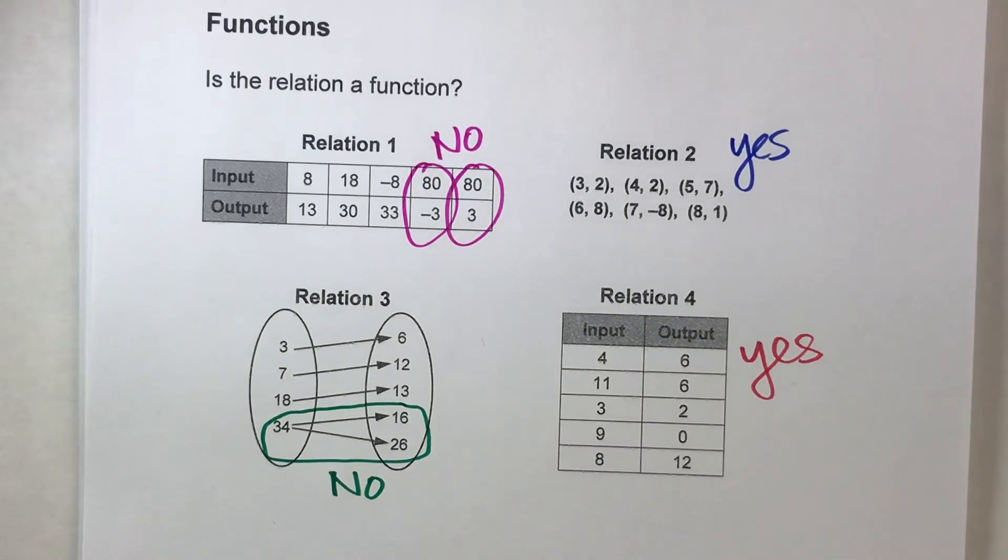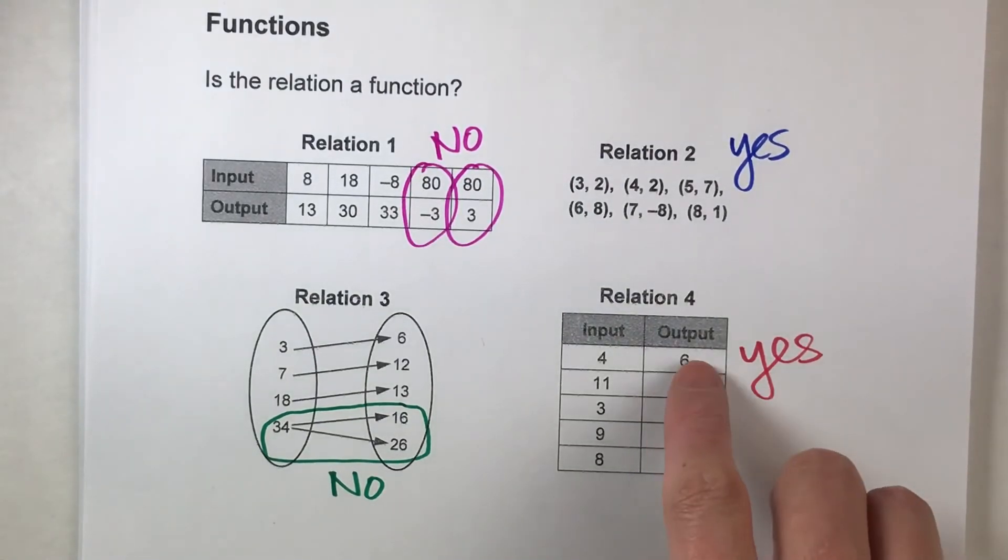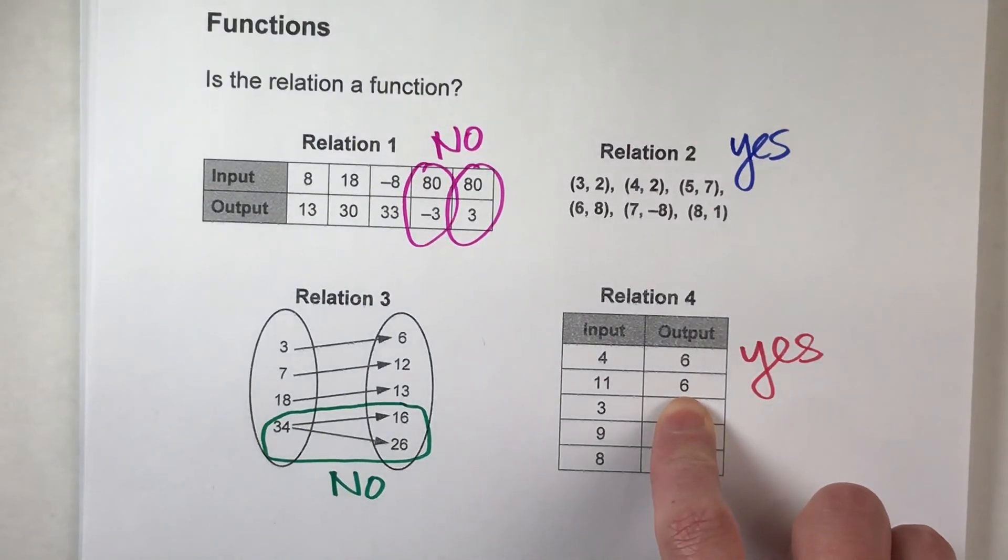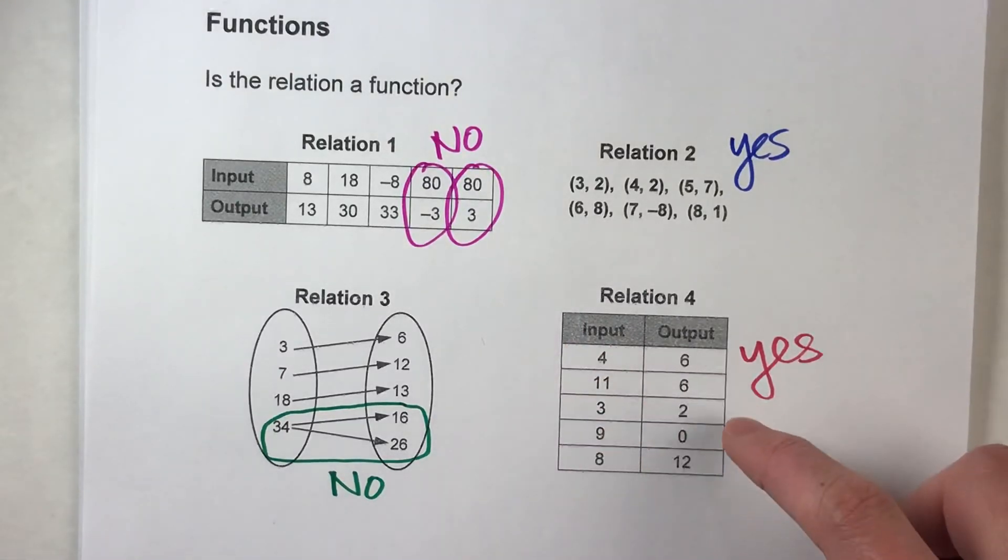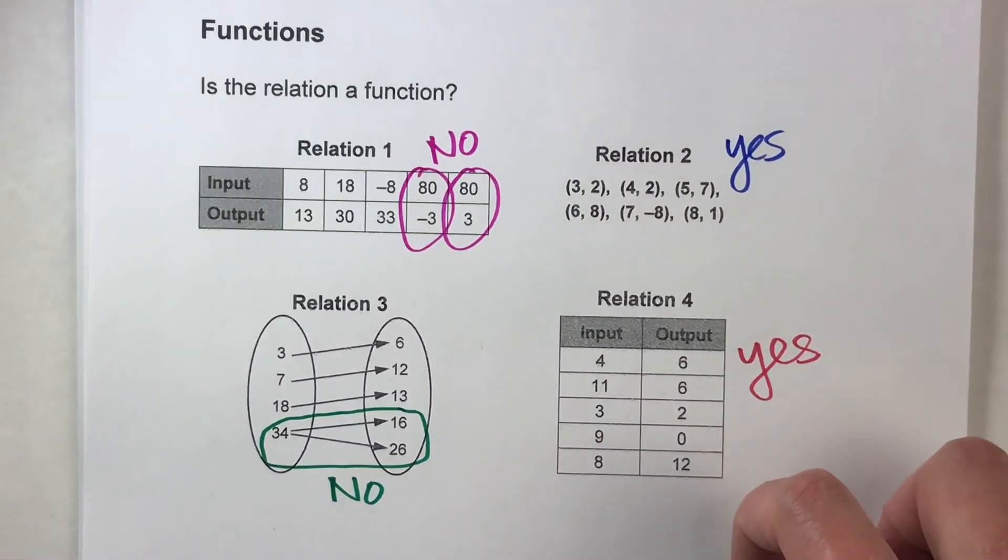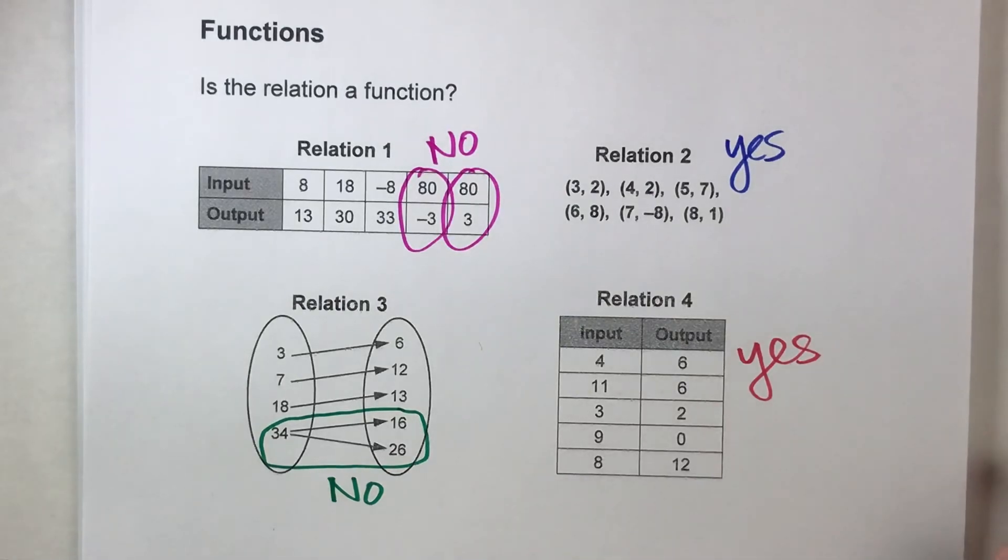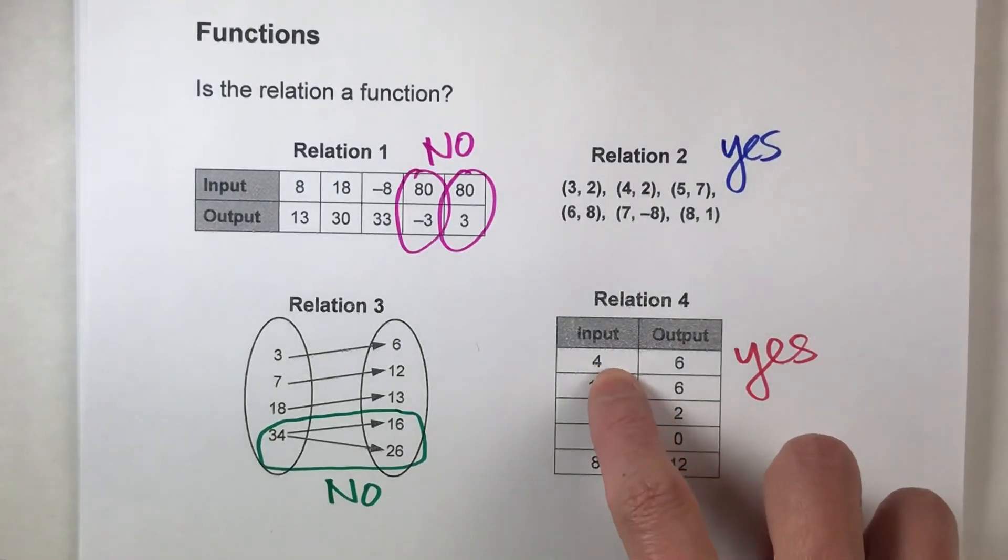Now a common question people ask is what if two different inputs gives us the same output? That's okay. The only thing we're looking for is if the same input gives us two different outputs. So it's the opposite of that. We're always checking to see if our input gives us more than one output. And if it does it's not a function.